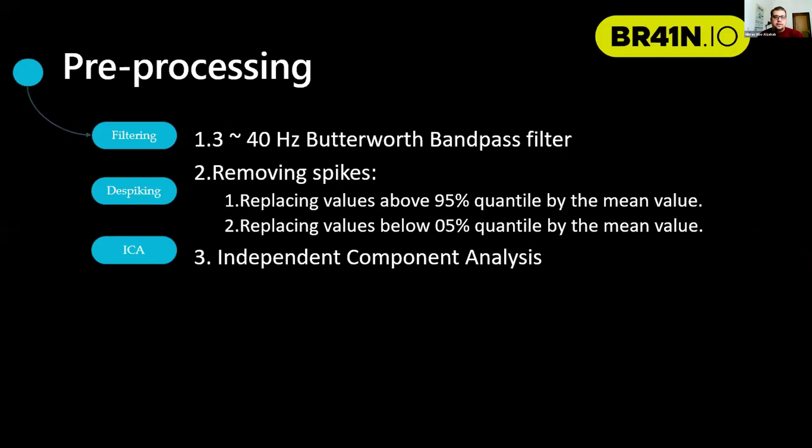For data analysis, we start with filtering the data using a Butterworth filter. After that, we remove spikes by replacing values above 95% quantile and below 5% quantile by the mean value, and use ICA, independent component analysis, for better data cleaning.